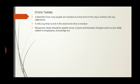The next topic is stock taking. Stock taking identifies how many people are needed at every level of the organization to achieve organizational objectives. Stock refers to the people who are in the organization, who have left, and who are in the process of joining — it is the maintaining of records of the human resource stock. It tells the organization what exists in the stock and what is needed. The manpower stock should be updated every two years to include changes such as new skills added to employees as well as their knowledge, so that records are maintained in a proper manner.